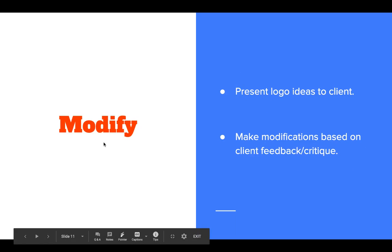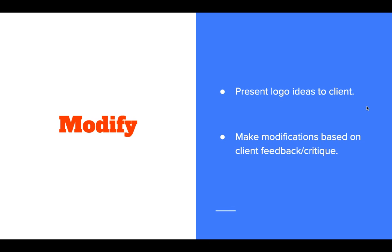The next stage is to modify. You would present your logo ideas to the client — in this case, to the class. You'll show your logo sketches and receive feedback, just as if we were doing a class critique. Then you make modifications based on that feedback. Show both sketches, receive feedback on what works, and use that to make changes to your design.